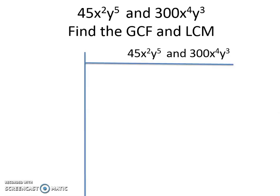Hello, this is a screencast to talk about how you can find the greatest common factor and the least common multiple when given certain monomials. I have 45x²y⁵ and 300x⁴y³. I'm going to use this chart method to help us organize for greatest common factor and least common multiple.